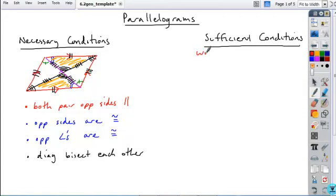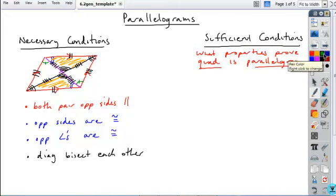For the first one, if I ask you what properties are sufficient conditions that prove a quadrilateral is a parallelogram - as I write these, what you're going to see me do is I'm going to underline what I start with and what I need to end with. This will help determine what properties I need to identify.